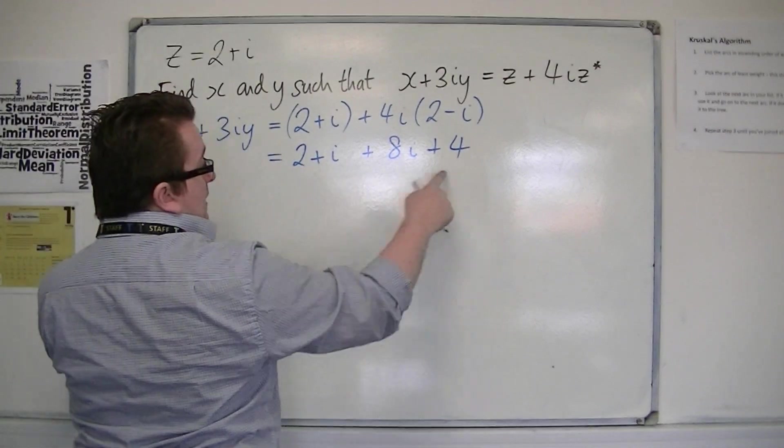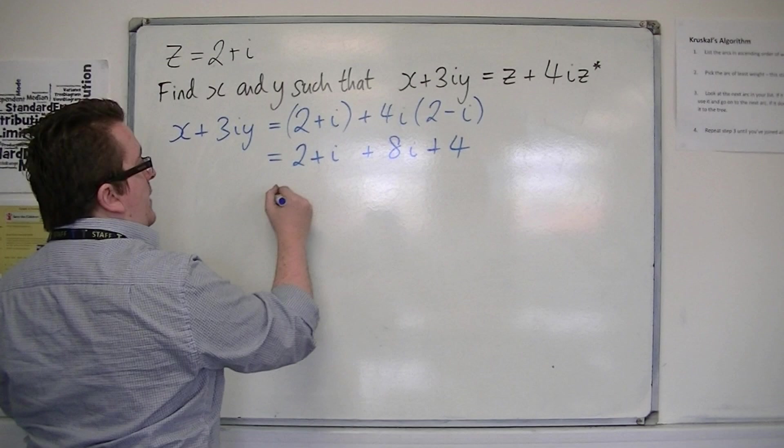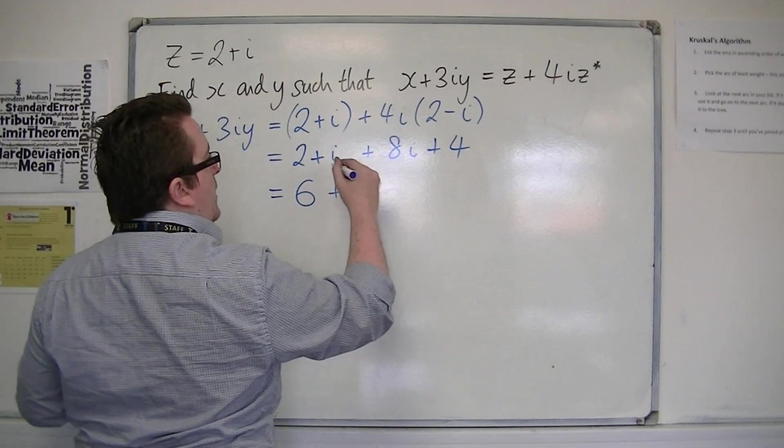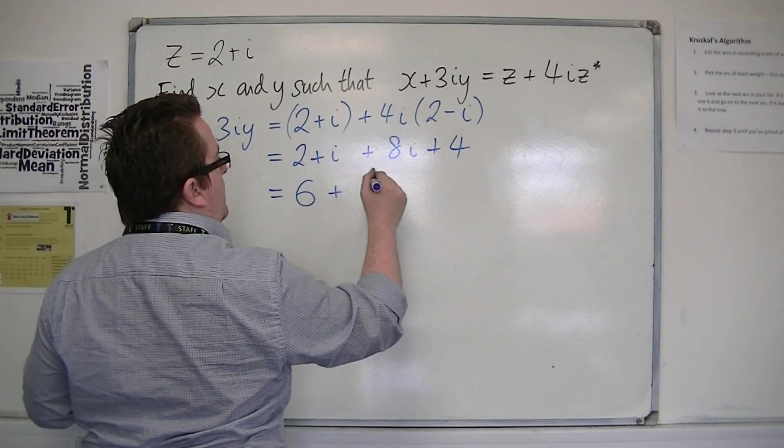So what we have is 2 plus 4 is 6, and 8i plus i must be 9i.